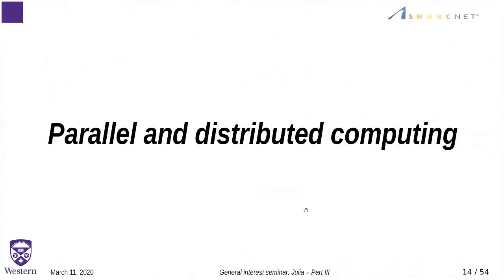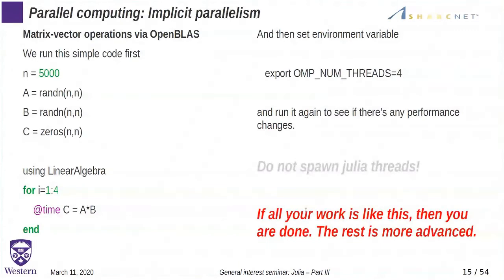Now let's take a look at how we can do parallel and distributed computing with Julia. For implicit parallelism with linear algebra operations, if you're doing a lot of linear algebra and want to make use of multi-cores or multi-threads, the underlying libraries are capable of doing that. All you need to do is set the number of threads before you start Julia. When you do the linear algebra operations, the underlying library will take care of parallelism for you. If that's all your work, then you're done and don't have to worry about the rest.